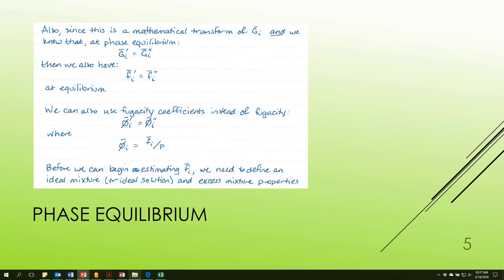I can divide by pressure and end up with fugacity coefficients. The fugacity coefficient for a species in a mixture is the fugacity of the species in the mixture divided by p. Now, what we're going to be trying to get to is how do I use this to define equilibrium.